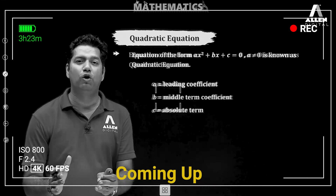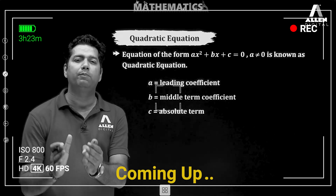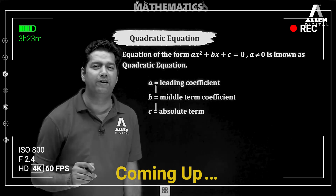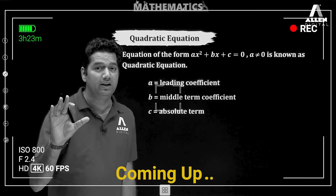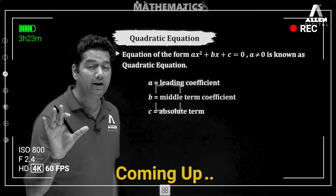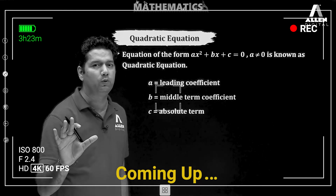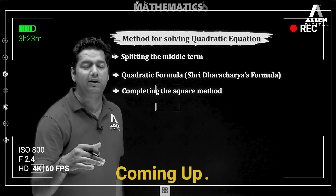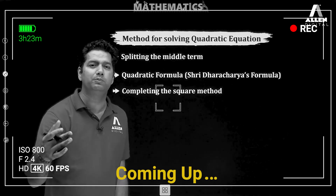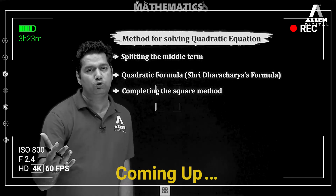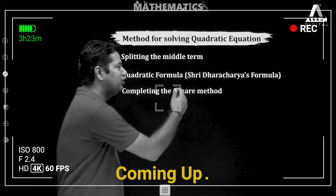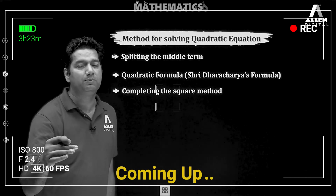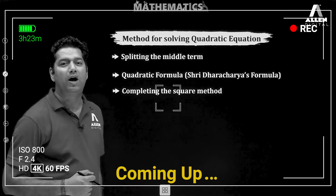An equation of the form AX square plus BX plus C is equal to 0 is known as a quadratic equation, where A is not equal to 0 — the leading coefficient should not be equal to 0. Methods include: first, by factorization — factorizing by splitting the middle term; second, by quadratic formula, also known as Sridharacharya's formula; and third, by completing the square method.